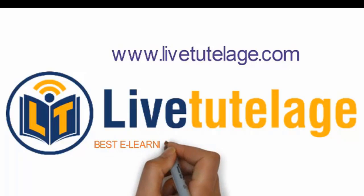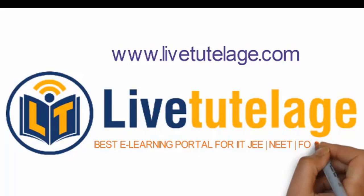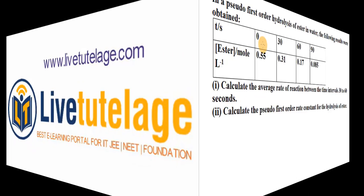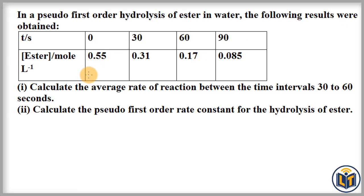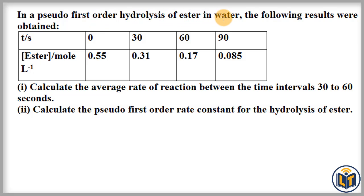Welcome to livetoplace.com, the best e-learning portal for IIT-JEE and NEET Foundation. In this video I will discuss how to calculate average rate of reaction and pseudo first order rate constants when at different time intervals the different concentration of the reactant is given. The problem says that in a pseudo first order hydrolysis of ester in water, the following results are obtained — at different time intervals, different concentrations of the reactant are given.